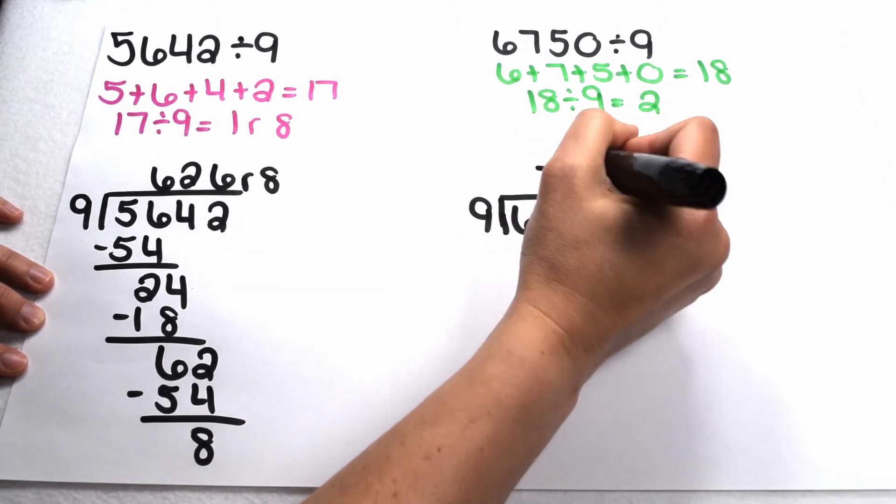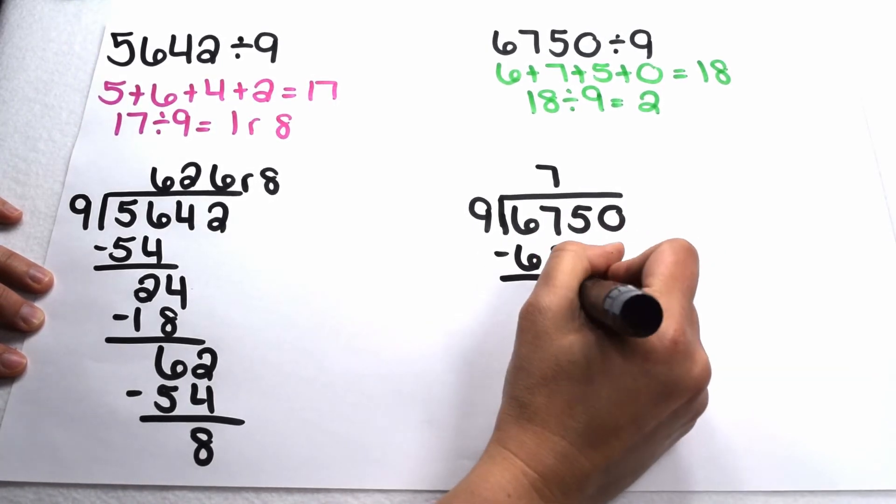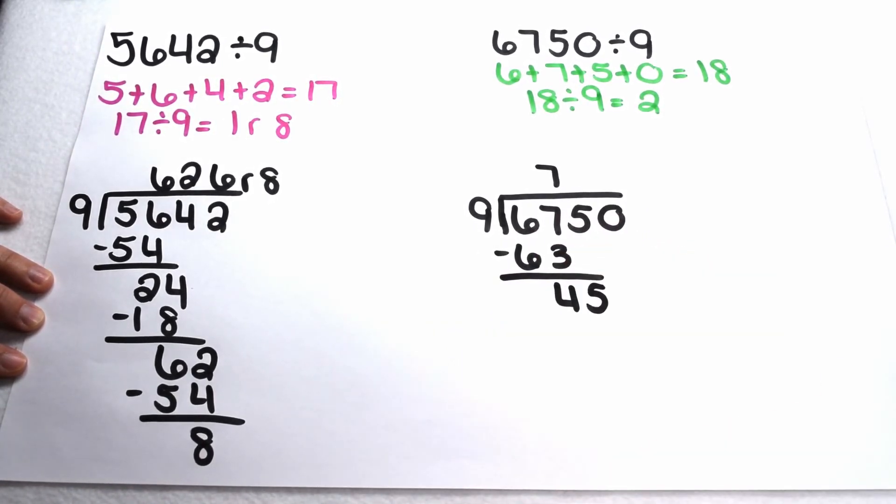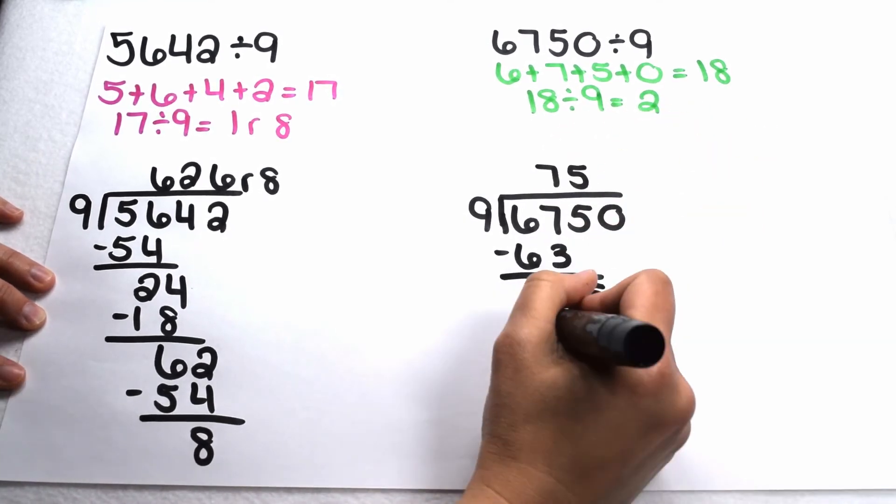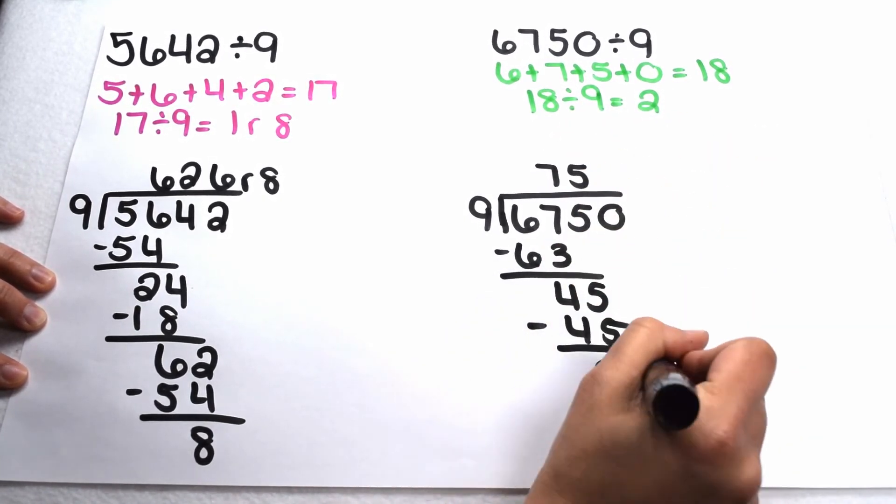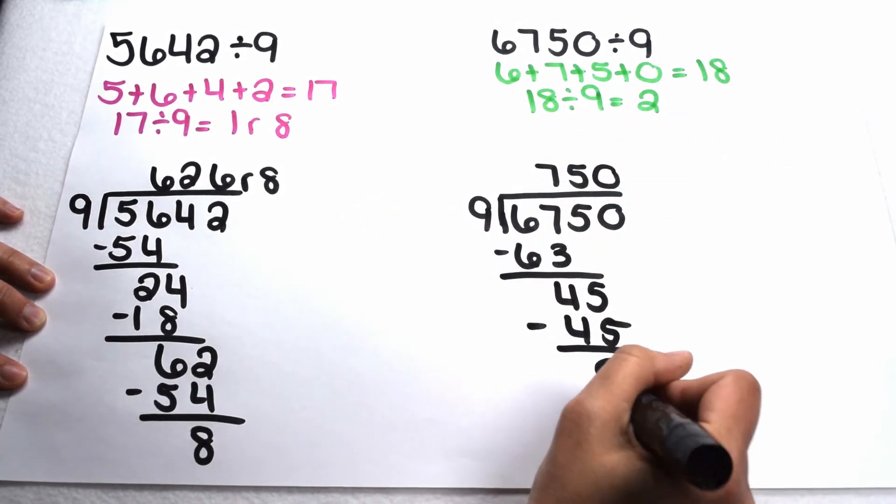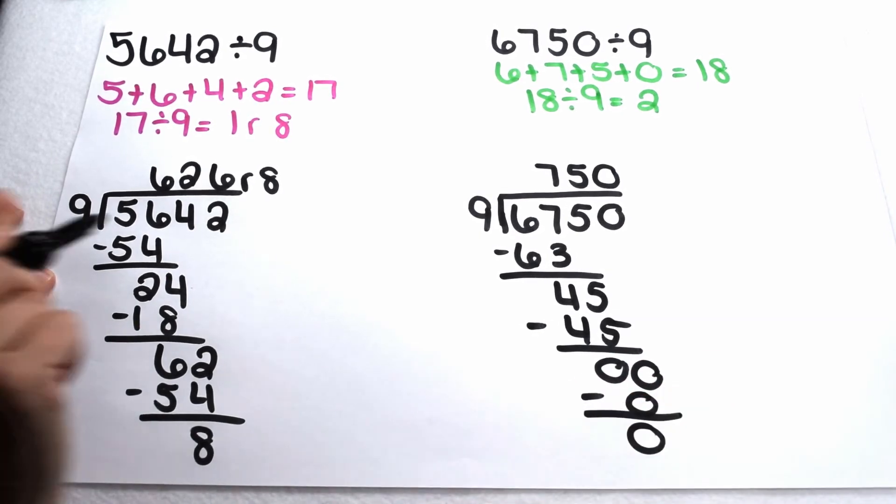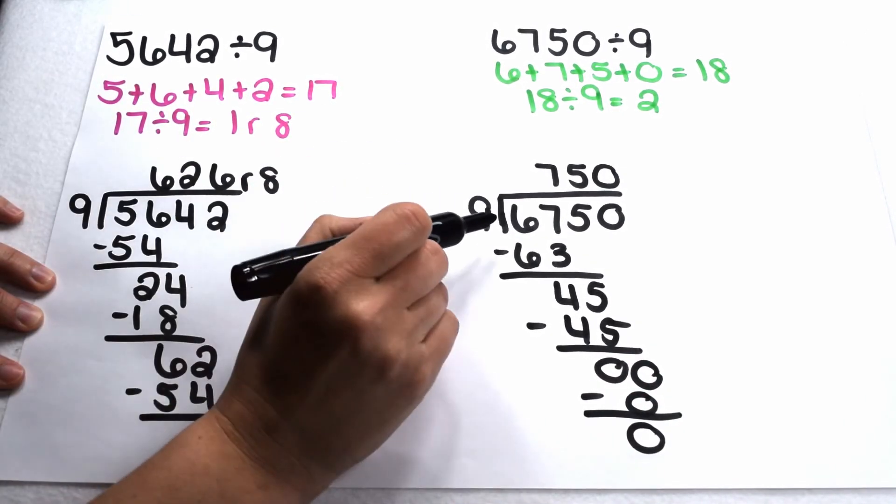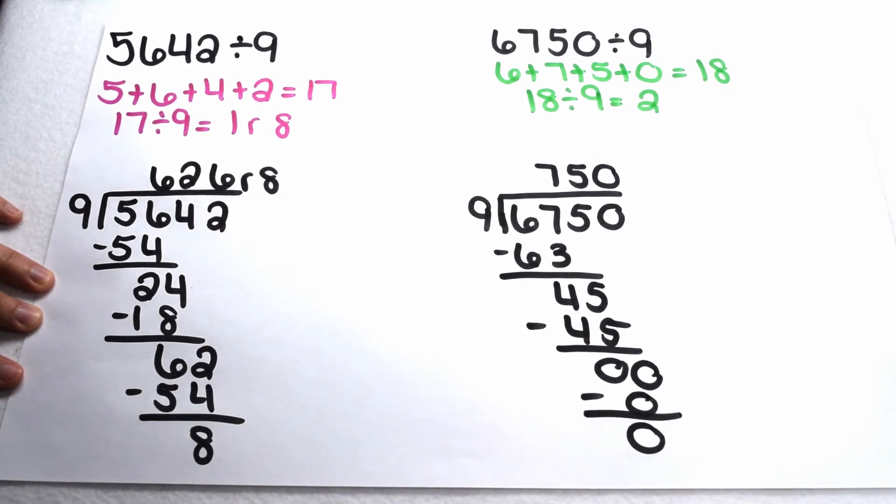9 goes into 67, 7 times, subtract out my 63. 67 minus 63 leaves me with 4, bring down my 5. 9 goes into 45, 5 times, subtract my 45, that leaves me with 0. I still need to bring down my 0. 9 goes into 0, 0 times and I need that 0 up in my quotient in the 1s place. Finish out my problem and we see we have nothing left over. 6,750 divided by 9 gives me exactly 750 with no remainders.